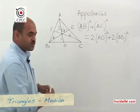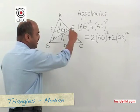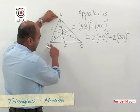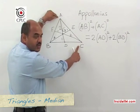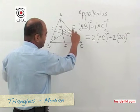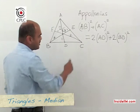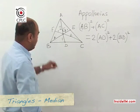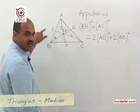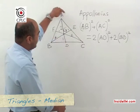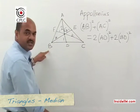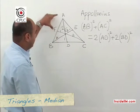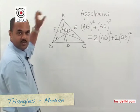Similarly, for median BE: BA² + BC² = 2·BE² + 2·CE². And for median CF: CA² + CB² = 2·CF² + 2·AF². This is Apollonius theorem, used to relate the sides of the triangle with respect to a median.